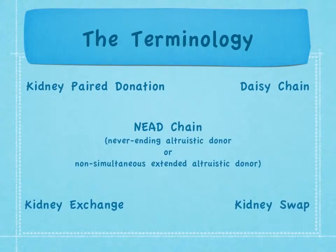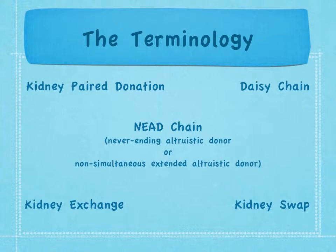The terminology associated with kidney paired donation can be confusing. Some of the terms you may hear include daisy chain and NEED chain, which stands for Never-Ending Altruistic Donor, or in other cases, Non-Simultaneous Extended Altruistic Donor chain. Other terms include kidney exchange and kidney swap. As you will see in the following slides, the concept behind kidney paired donation is similar regardless of the terminology used.